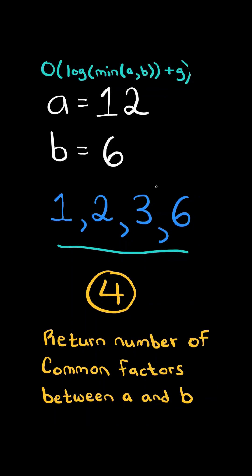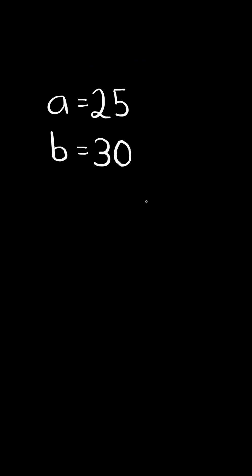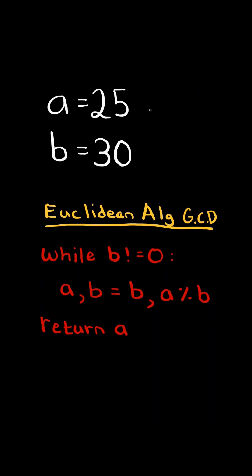We will solve this in O of log of the minimum of a and b plus g, where g represents the greatest common divisor. Consider this new example, and consider the Euclidean algorithm for finding the greatest common divisor.